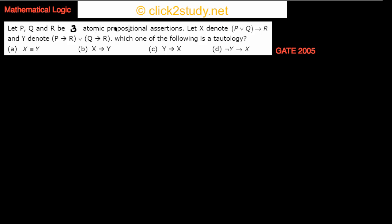Let P, Q, and R be three atomic propositional assertions. Let X denote 'P or Q implies R' and Y denote 'P implies R or Q implies R.' Which one of the following is a tautology? A tautology is a logical statement that is always true. So we have X, which is this expression, and Y, which is this one.